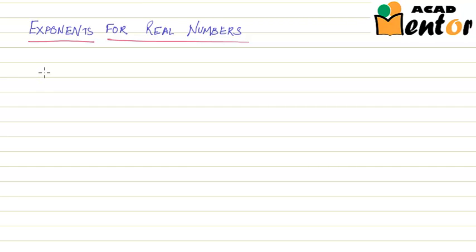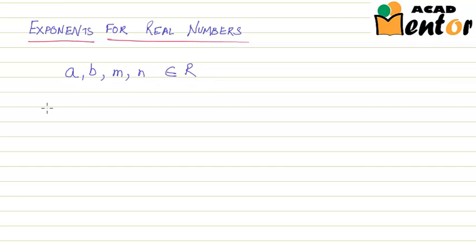Hi friends, this is the last video on the first chapter on number systems. Today we will talk about exponents for real numbers. Let us assume that a, b, m and n are any real numbers. We will talk about a few properties for exponents.